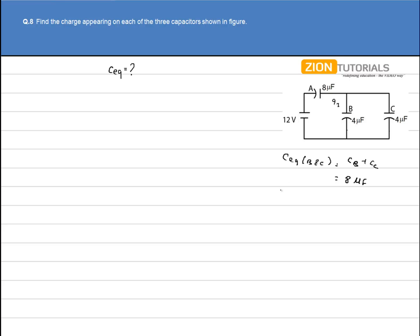Now to calculate the equivalent of A and the equivalent of B and C, that is C equivalent of the net circuit, this 8μF and this 8μF are in series now. The series equivalent can be easily calculated by 1 by C equivalent as 1 by 8 plus 1 by 8 which comes out to be 1 by 4. So C equivalent of the circuit is 4μF.